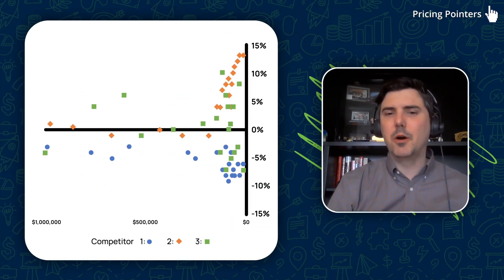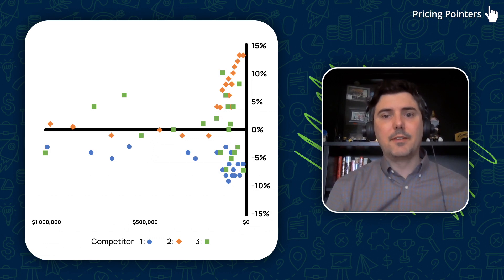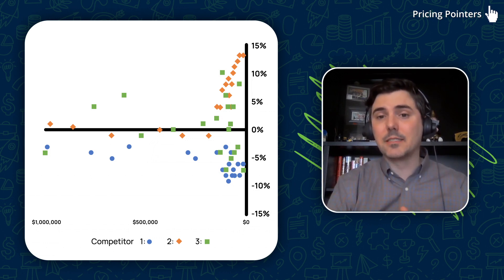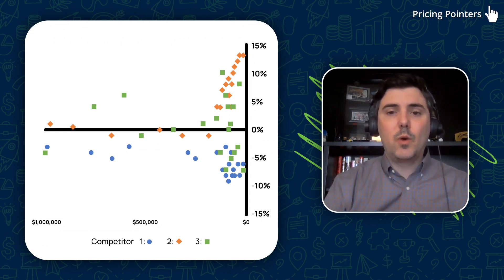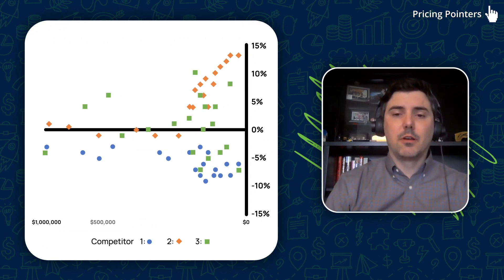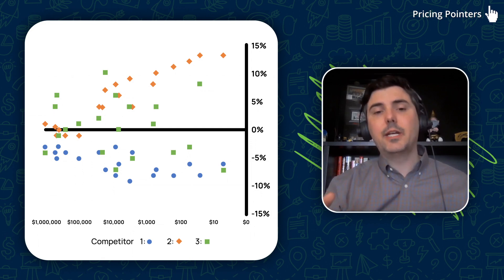When looking at sales data, you frequently see it skewed by a handful of hero SKUs — your most important SKUs with the highest sales — which compress the axis. When you convert to a logarithmic axis, things spread out more, and your smaller SKUs, which are still important, get a chance to breathe and show trend data. That's why I use a logarithmic axis on the x-axis.